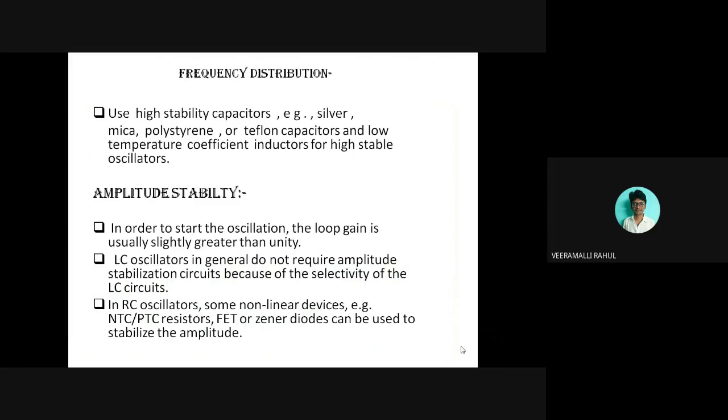Now let's discuss amplitude stability. In order to start the oscillation, the loop gain is usually slightly greater than unity. LC oscillators generally do not require amplitude stabilization circuits because of the selectivity of LC circuits.